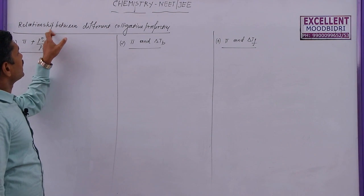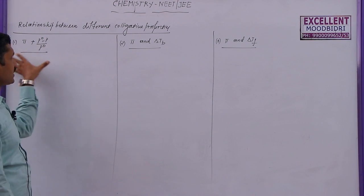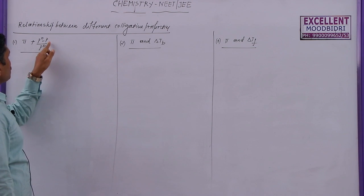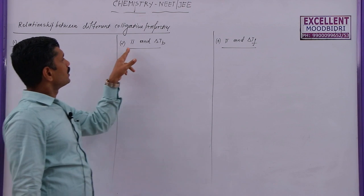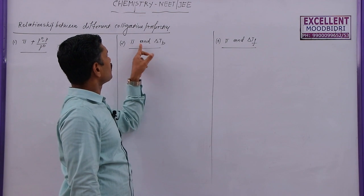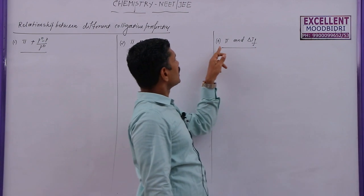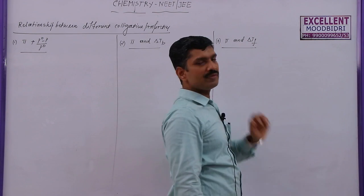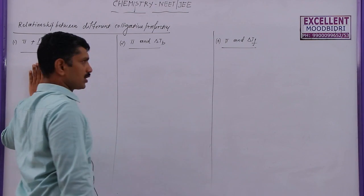Here we discuss the relation between the different colligative properties. There are three points. First, the relation between osmotic pressure and relative lowering of vapour pressure. Next, the relation between osmotic pressure and elevation of boiling point. Next, the relation between osmotic pressure and depression in the freezing point. These three cases are taken up here first.